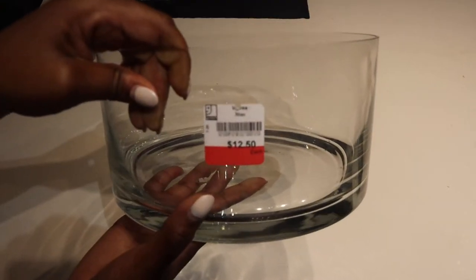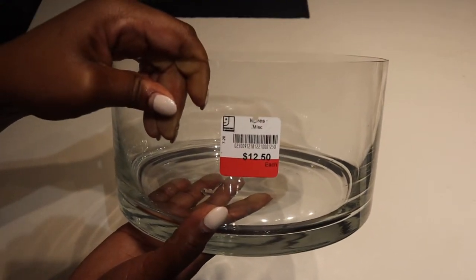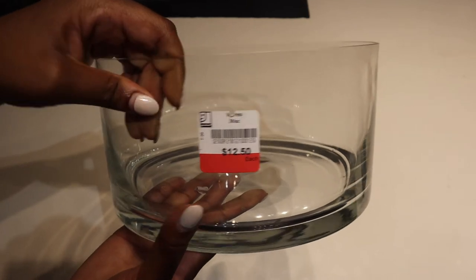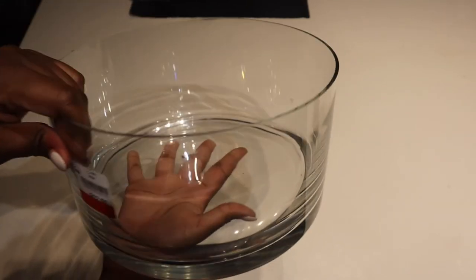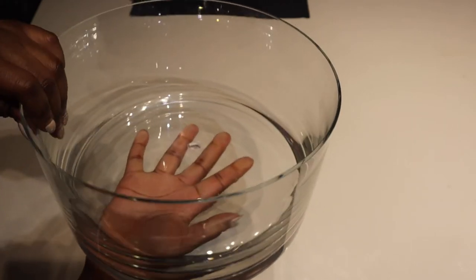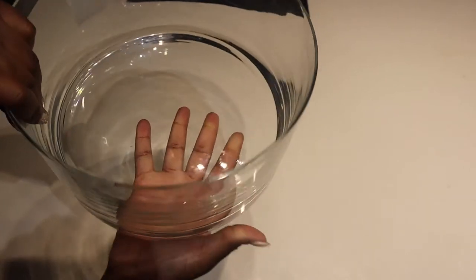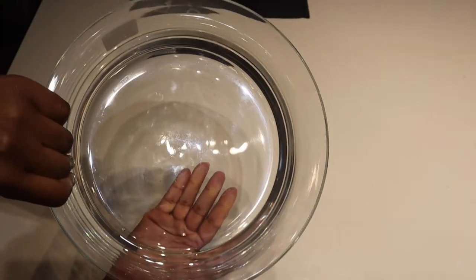All right, so the first thing you're gonna need is a large bowl. I ended up getting mine at Goodwill. Just to let you guys know, if you're going to get a large bowl height-wise, you're most likely gonna have to customize your own wicks, so just be careful on how tall the bowl is.